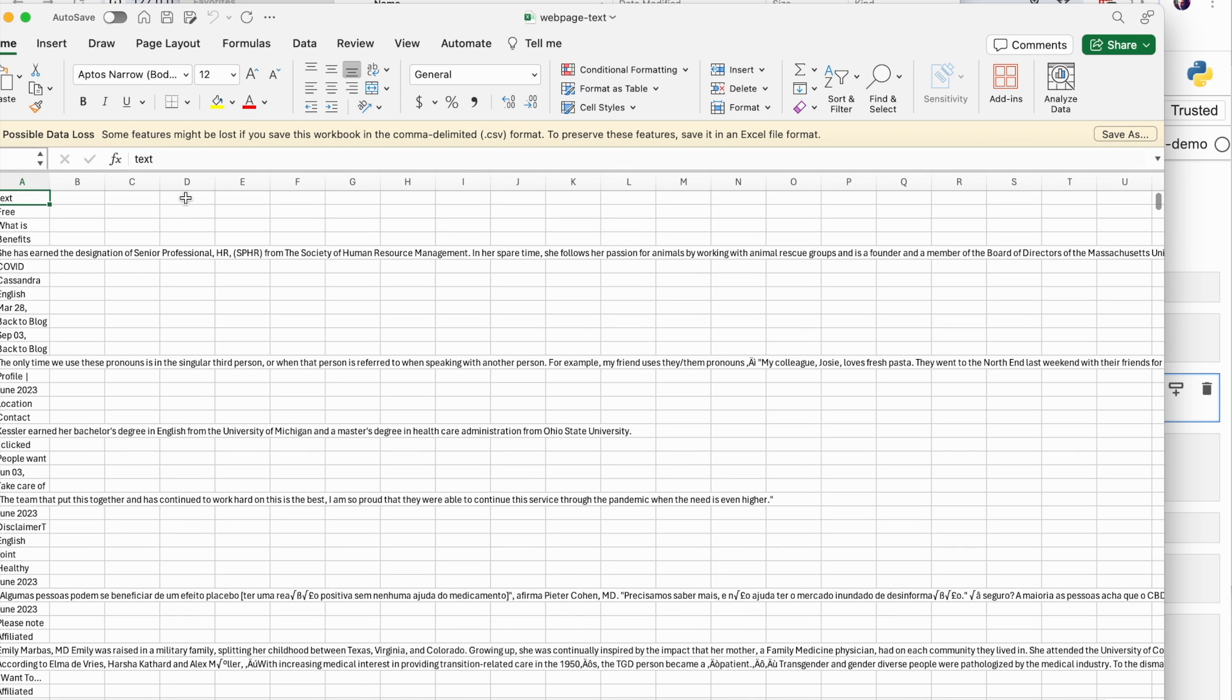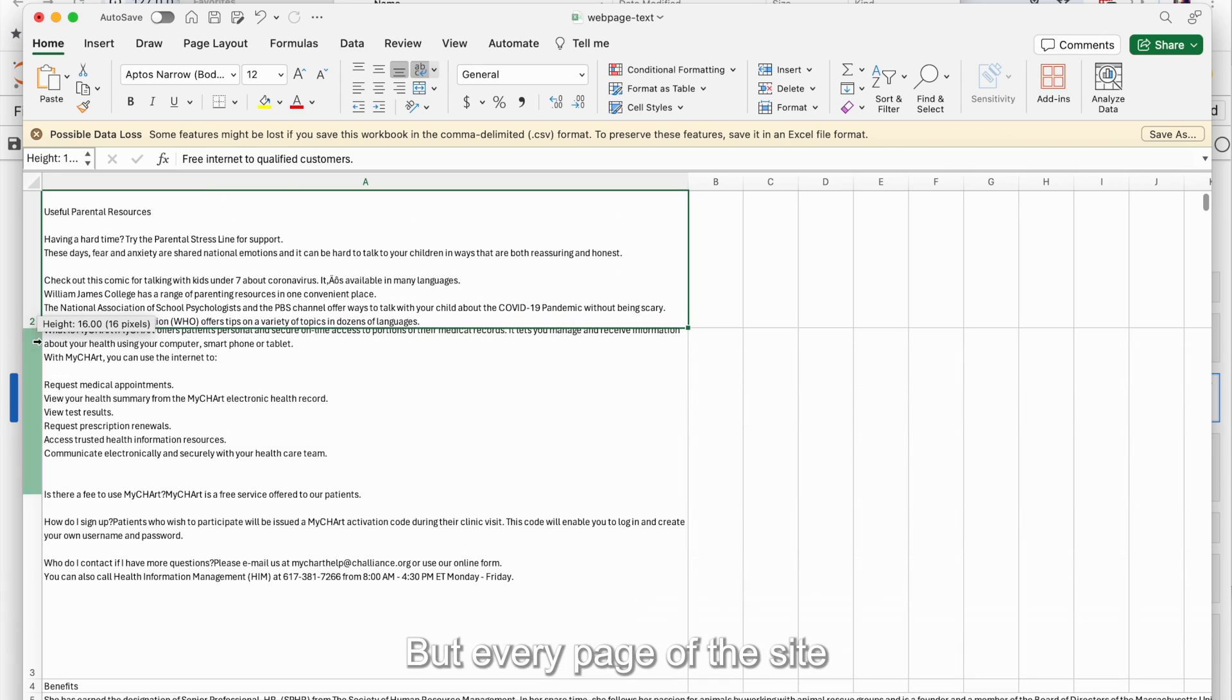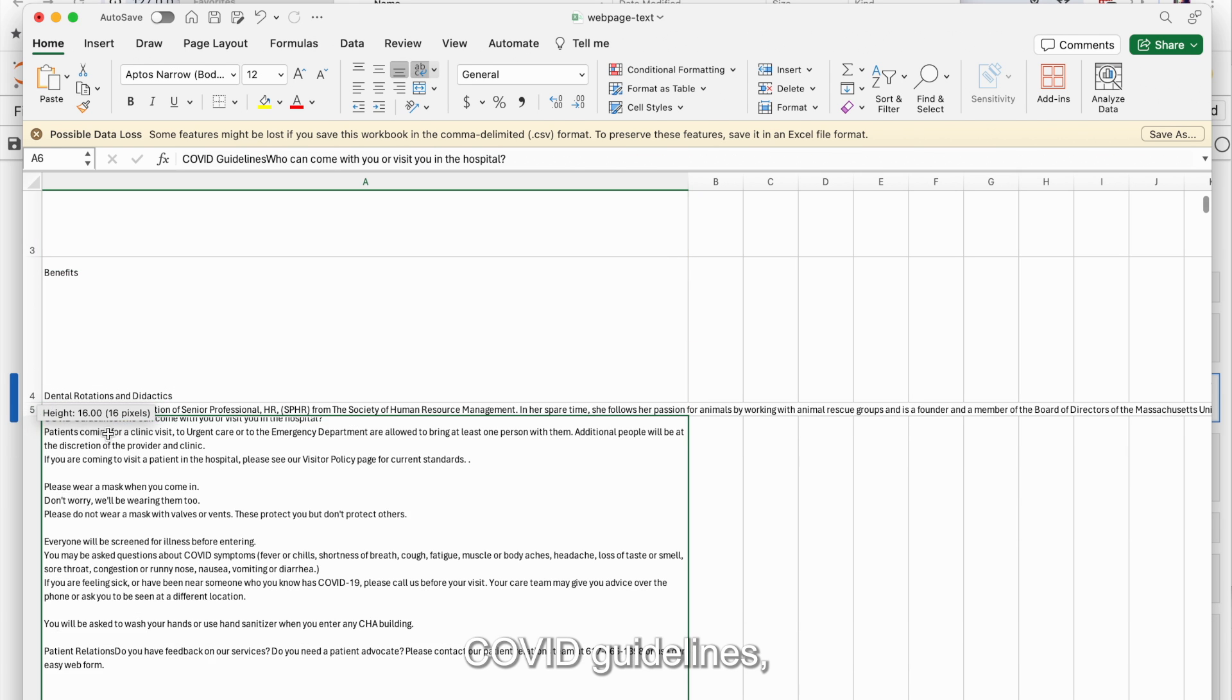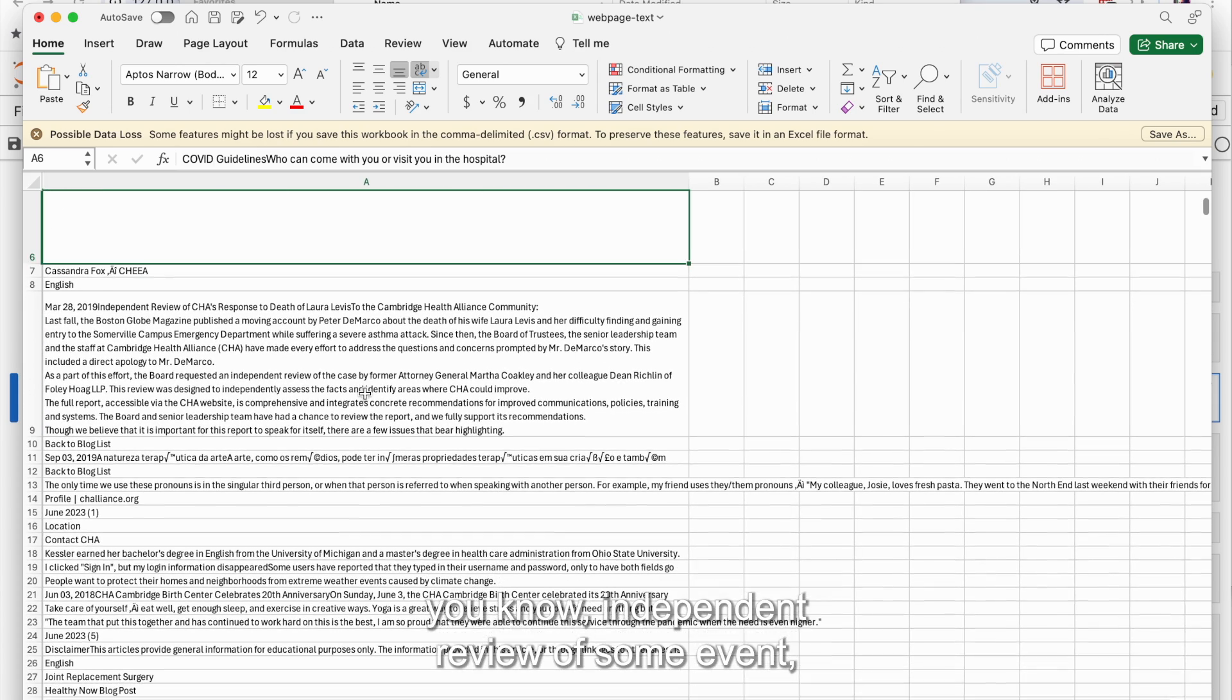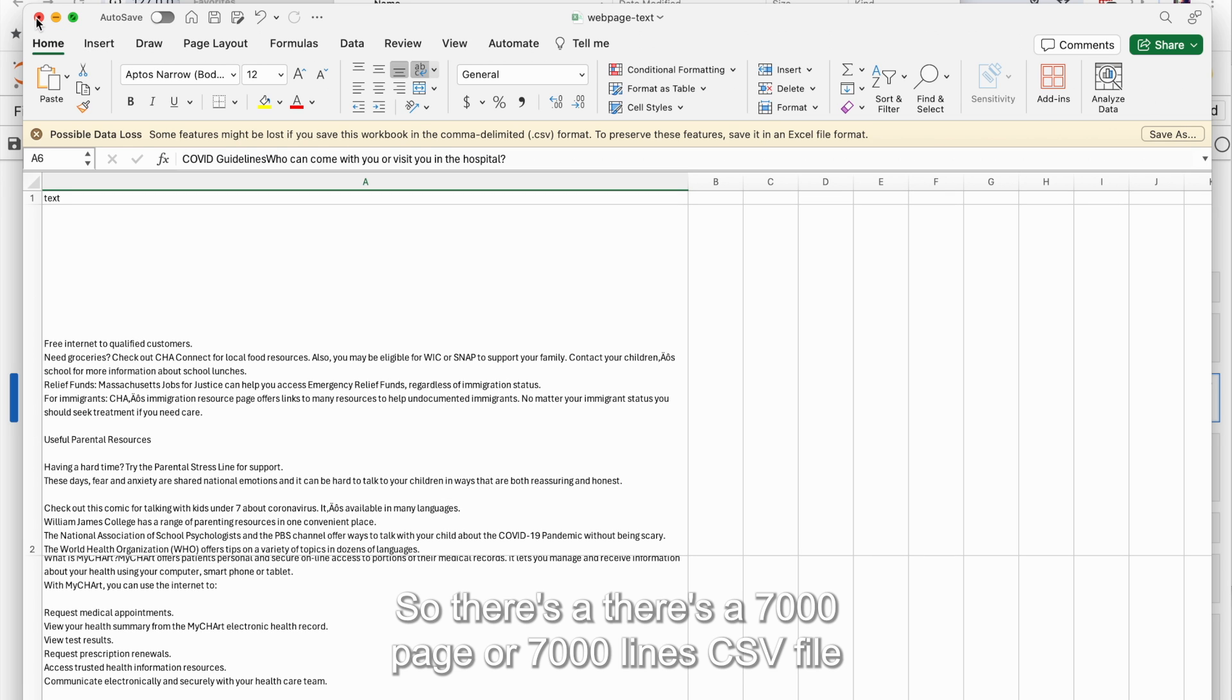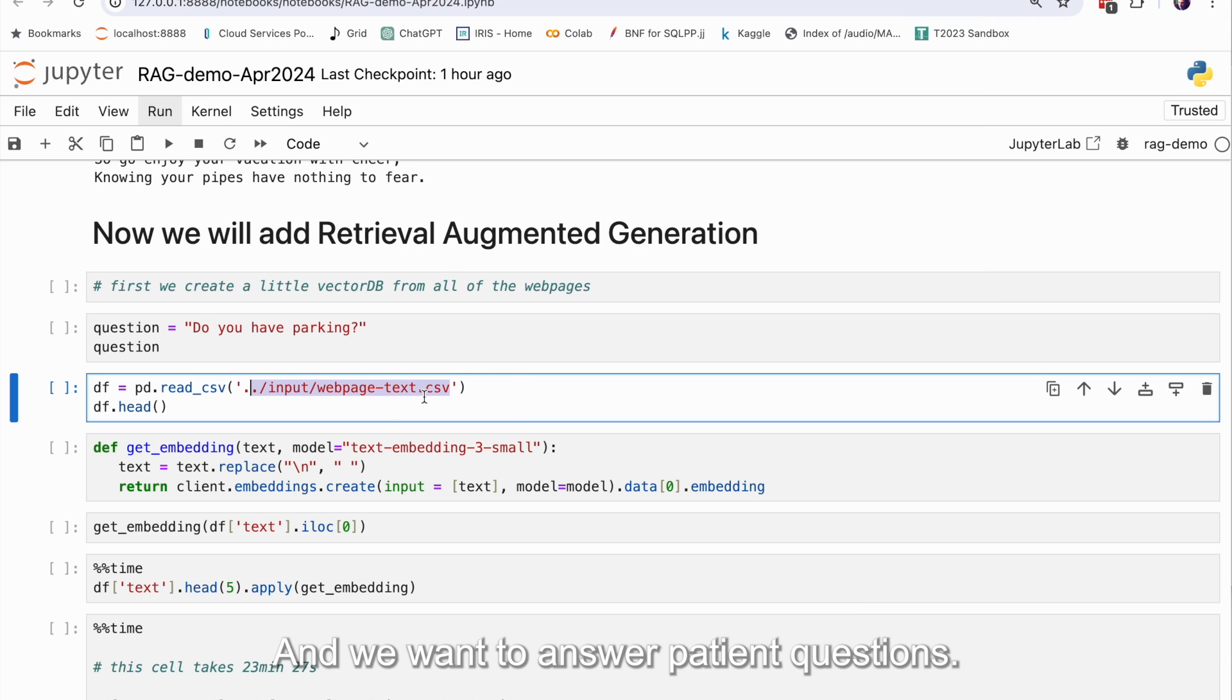It's a little hard to see because it's wrapping around. The cell's bigger. But every page of the site gets a different cell, and it just has the text of the page. Okay, so some pages are small. Some pages have more information in it. COVID guidelines. You know, independent review of some event. How to contact CHA, Cambridge Health Alliance, that sort of thing. So there's a 7,000-page or 7,000-line CSV file, basically, that has all the text from this relatively small website, but big enough to make it interesting.